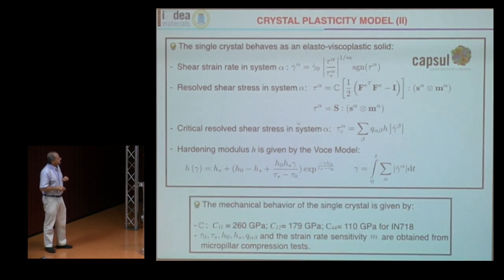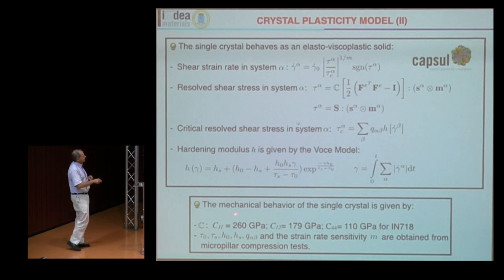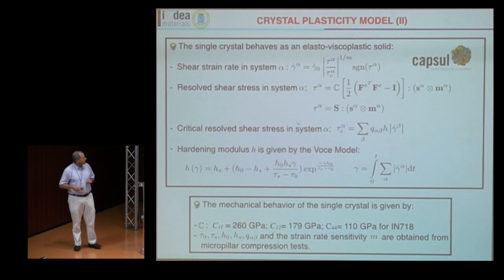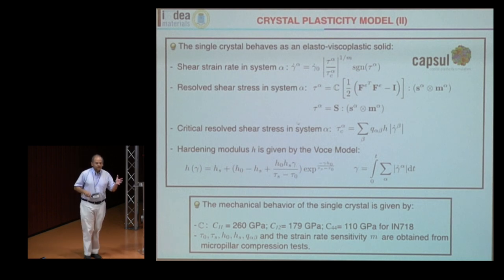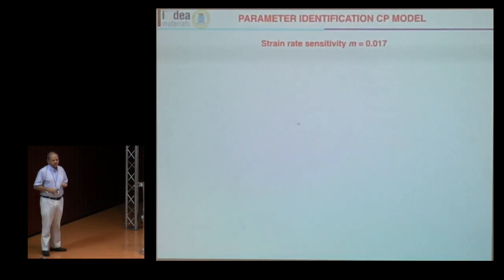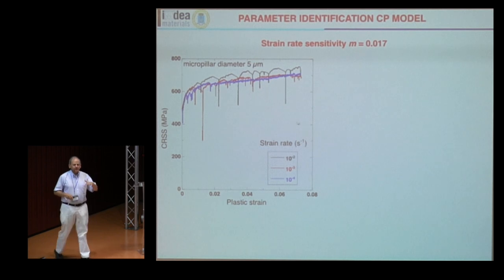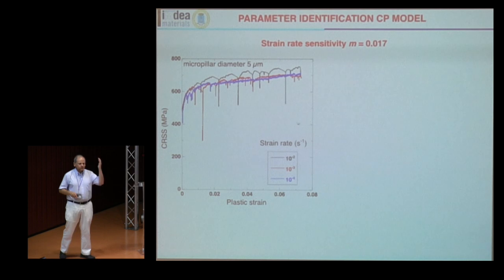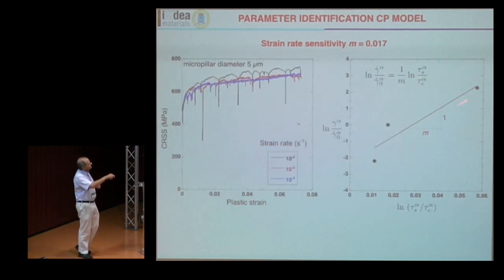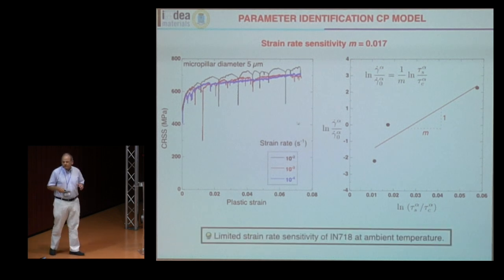This model relies on a number of parameters. The elastic constants of nickel are well known. Then you have the initial critical resolved shear stress, the saturation critical resolved shear stress, the initial and saturation hardening moduli, the latent hardening parameters, and the strain rate sensitivity. These parameters are obtained from micropillar compression tests. First you get the strain rate sensitivity by carrying out tests at different strain rates — 10⁻², 10⁻³, 10⁻⁴ — and there is a small but measurable strain rate sensitivity at room temperature up to 500°C.